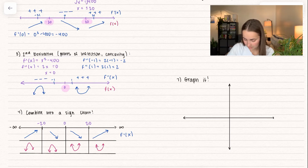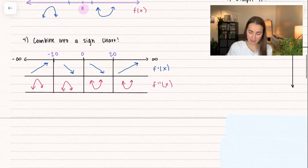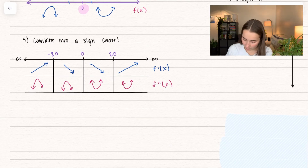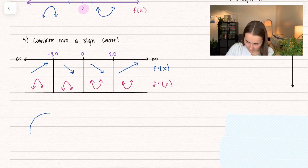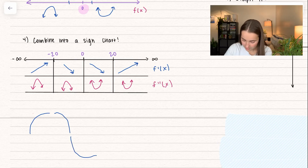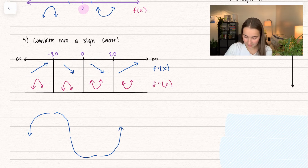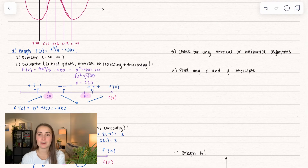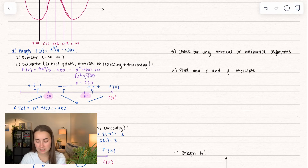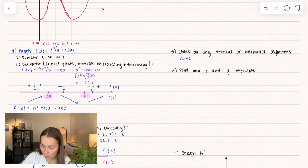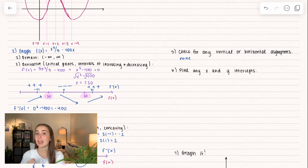Connecting the dots: we have a function that's increasing but concave down, then decreasing and concave down, then we switch to decreasing and concave up, and finally increasing and concave up. Since we're given the actual function, we can take extra steps — checking for vertical and horizontal asymptotes. In this case, since we're working with a polynomial, we don't have any. Always check for illegal values and end behavior.